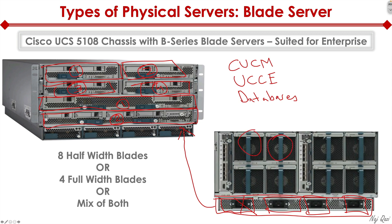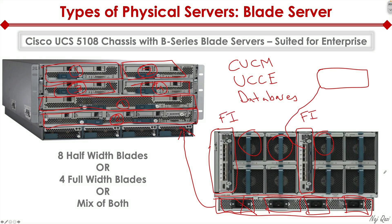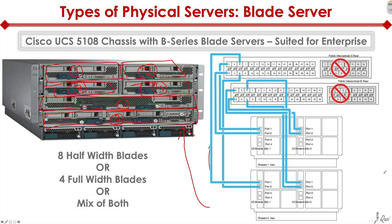We also have fans on the back, and IO modules — also called FEXes or fabric extenders — that connect the UCS chassis to the rest of the network by uplinking to a fabric interconnect, or FI. In a practical data center design, you will have redundant FIs at the top acting as top-of-rack switches, providing redundancy and high availability for interconnecting each UCS chassis running mission-critical applications.